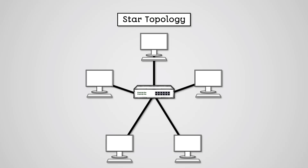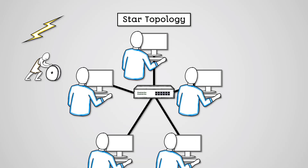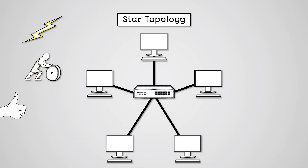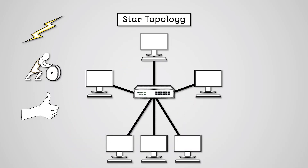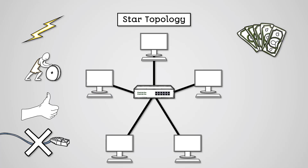The advantages of a star topology are that you have fast connections as each workstation has its own connection. It will not slow down as much as other topologies when more users are using it. It is easy to add new workstations to the network and if one cable fails the other workstations keep working. The disadvantages are that it's expensive to set up due to increased cabling costs and you need a central switch.